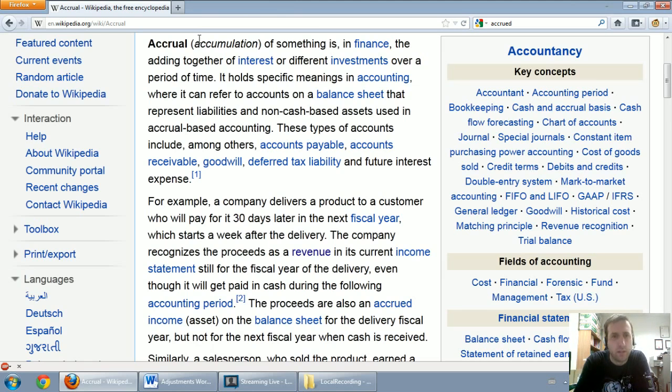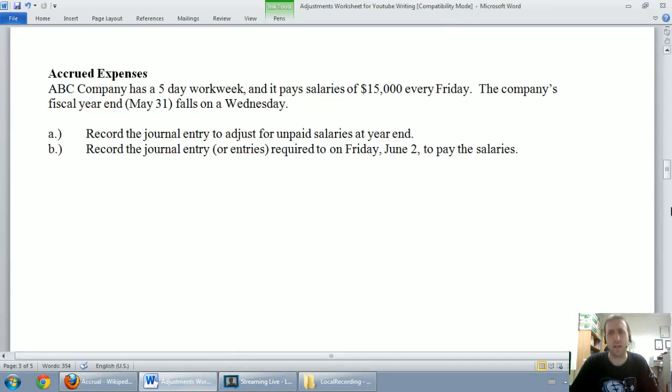It holds specific meanings in accounting where it can refer to accounts on a balance sheet that represent liabilities and non-cash based assets used in accrual based accounting. These types of accounts include accounts payable, accounts receivable, goodwill, deferred tax liability, and future income tax. But even after reading that Wikipedia explanation, I'm still a little bit baffled.